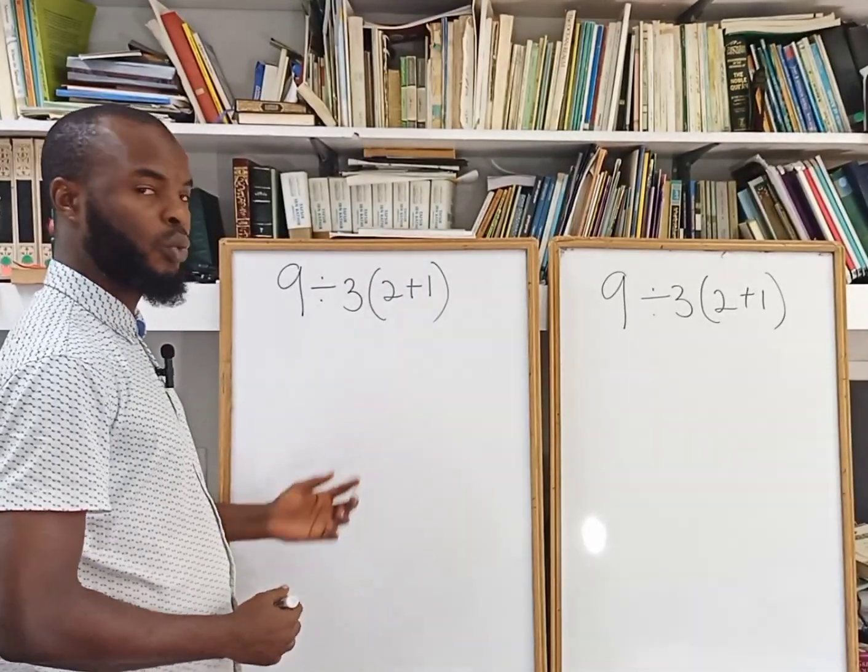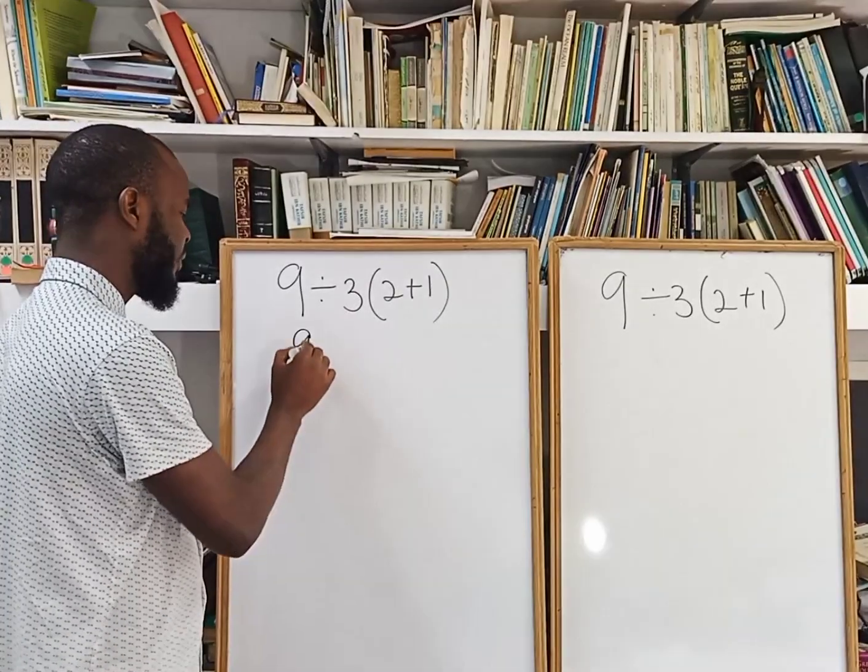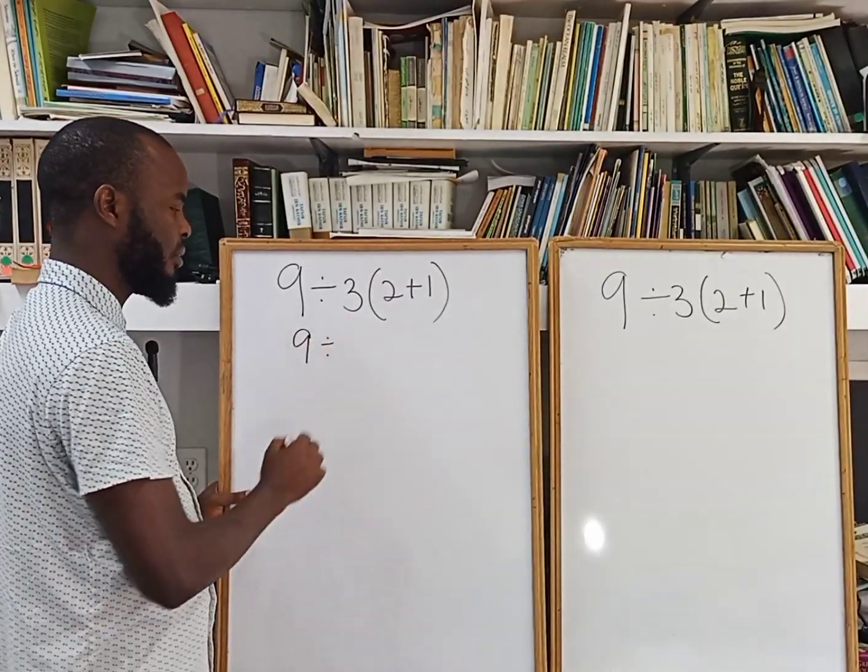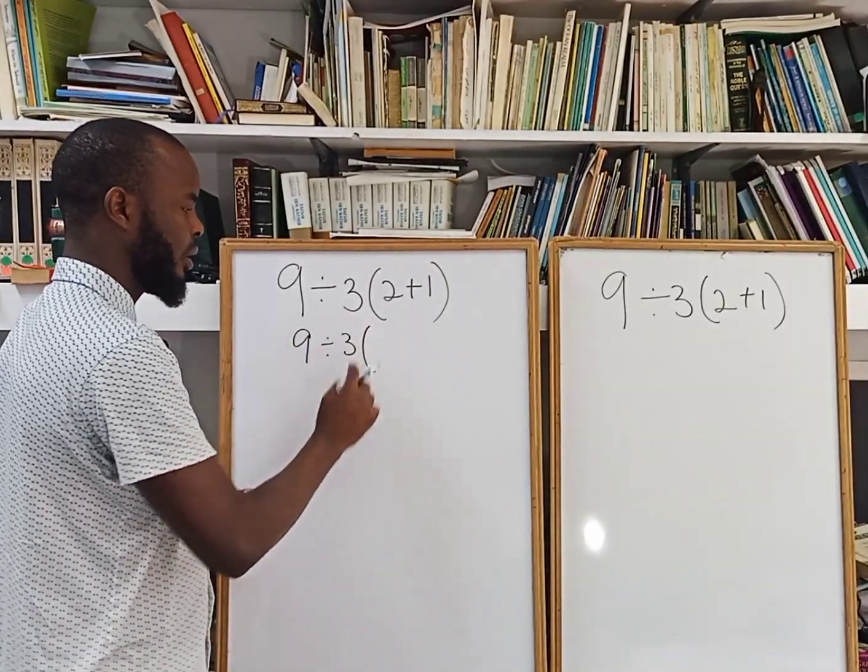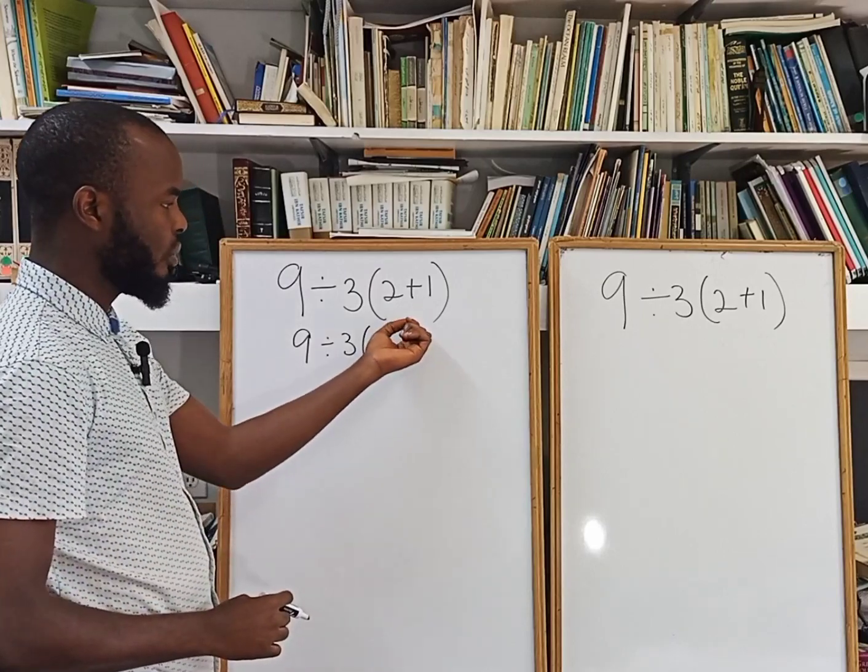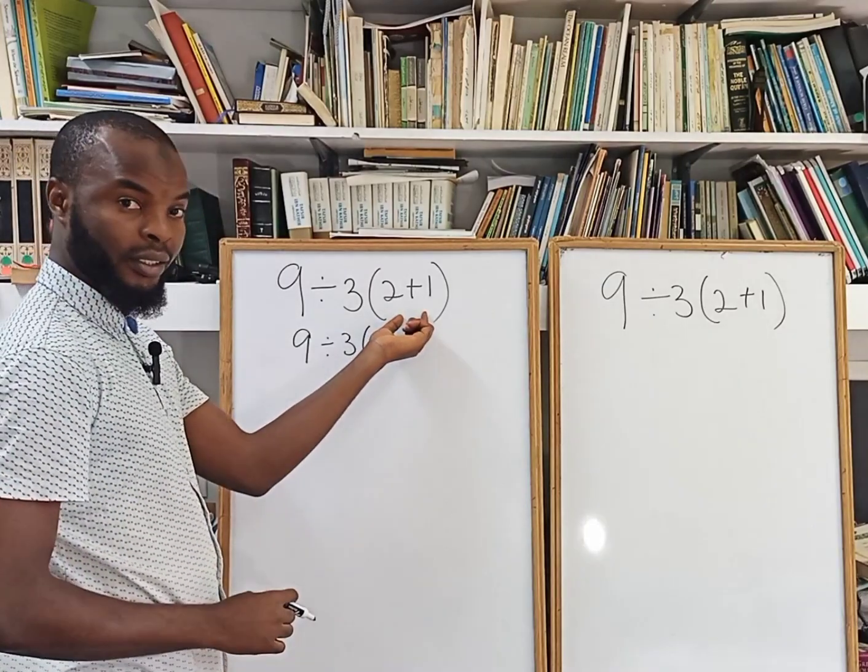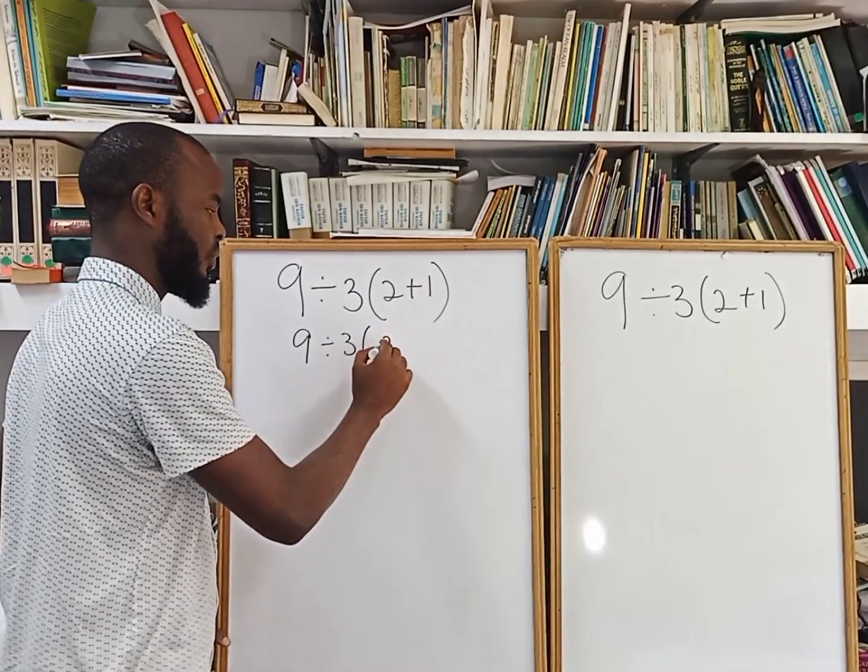Yeah, I'm having 9 divided by 3. We need to solve the values in the parentheses. So 2 plus 1 is going to give us what? 3.